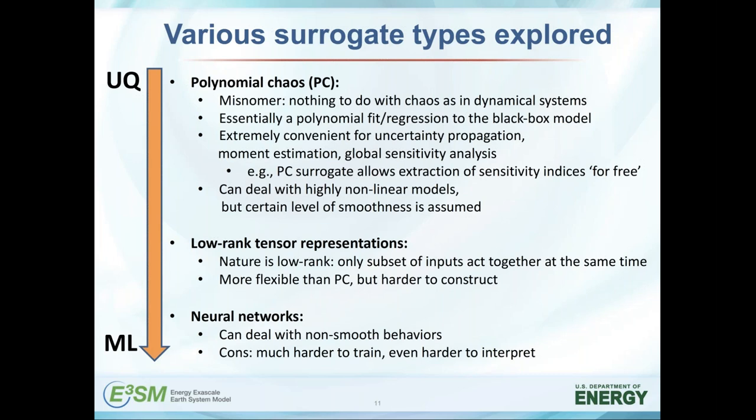The conventional surrogate we started with is polynomial chaos — a misnomer in the climate community, since it has nothing to do with dynamical systems chaos. In its simplest interpretation, think of it as a polynomial fit or regression. It's a machinery that allows a functional representation of random variables, treating inputs and outputs as random variables. It comes equipped with moment estimation that is free — no additional sampling required — and sensitivity information also comes for free. You basically collect coefficients in front of the polynomials to get GSA global sensitivity information for free. It can work with highly non-linear models, though a certain level of smoothness of output with respect to inputs is assumed.